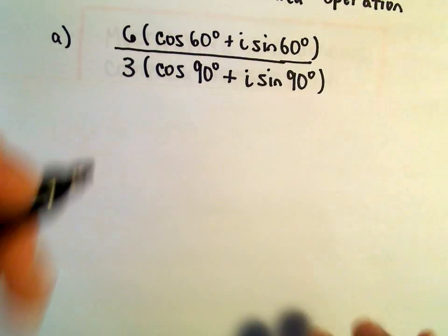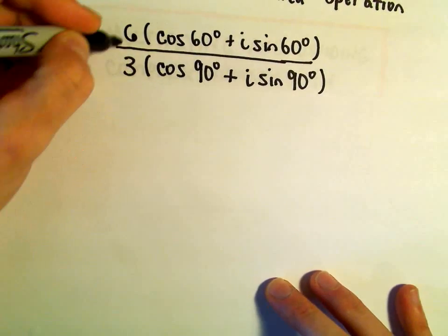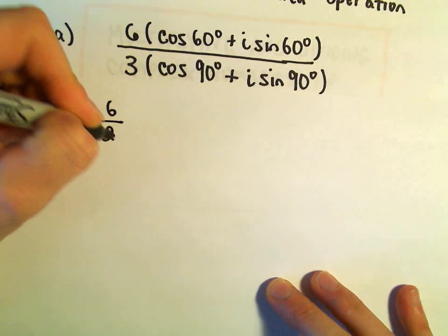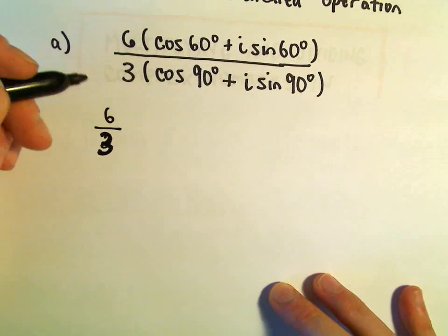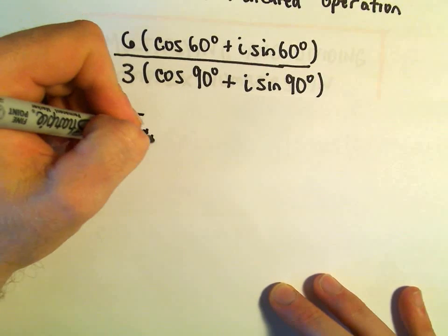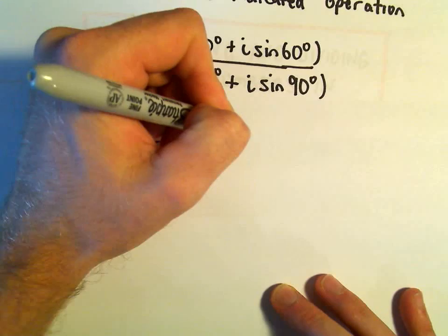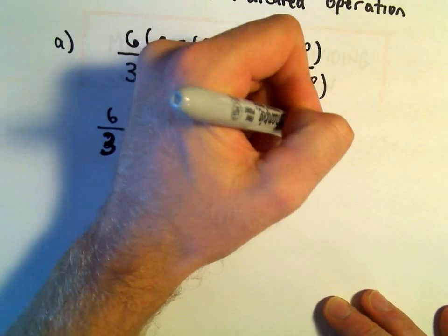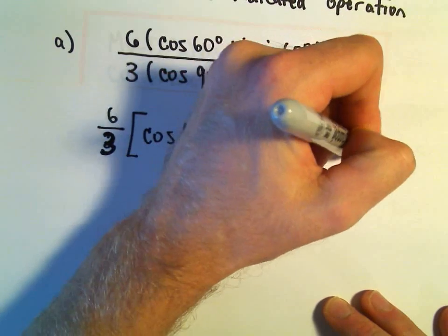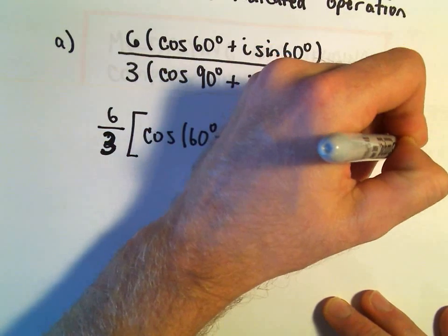So in this case, if we do the division, we'll get 6 divided by 3, and then it says we simply take cosine of 60 degrees minus 90 degrees plus i times sine of 60 degrees minus 90 degrees.